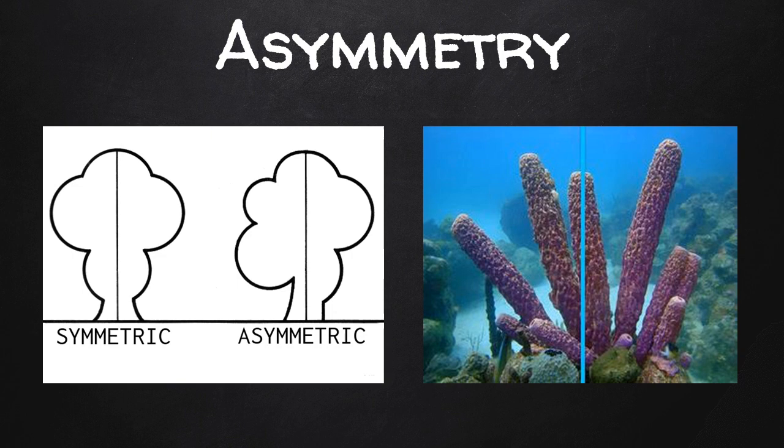The prefix 'a' means 'not,' so asymmetry is having no symmetry, like the body of a sponge, pictured here.